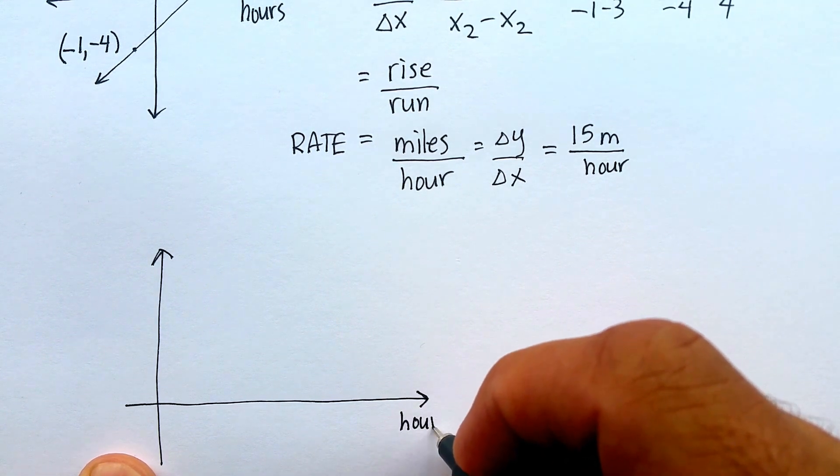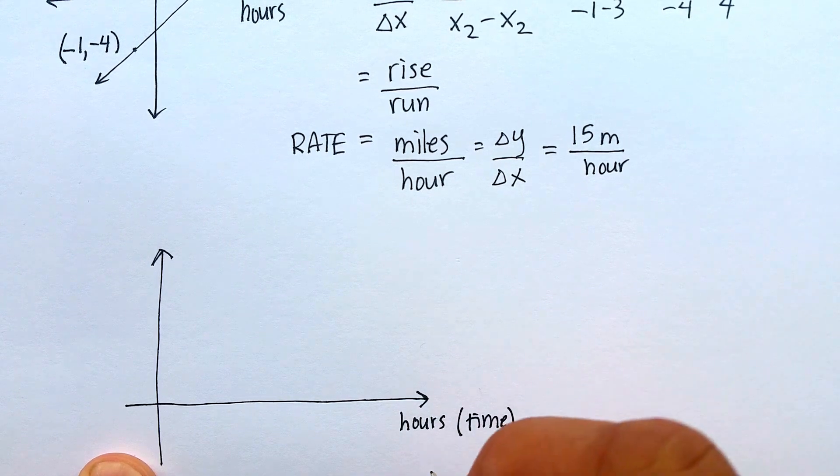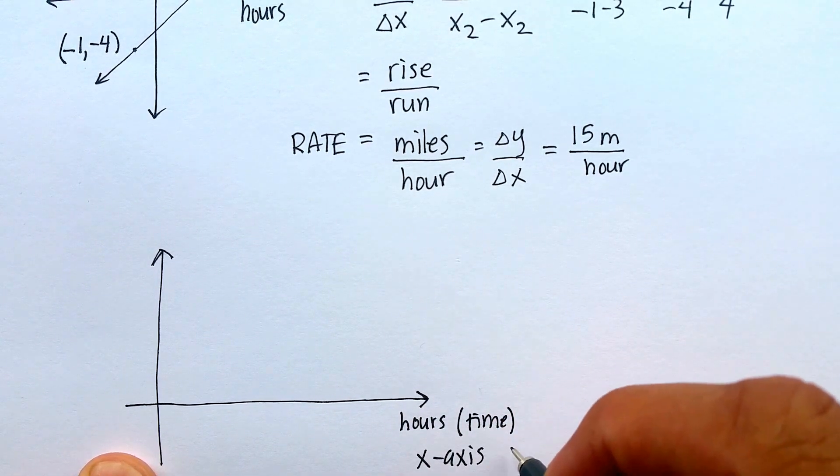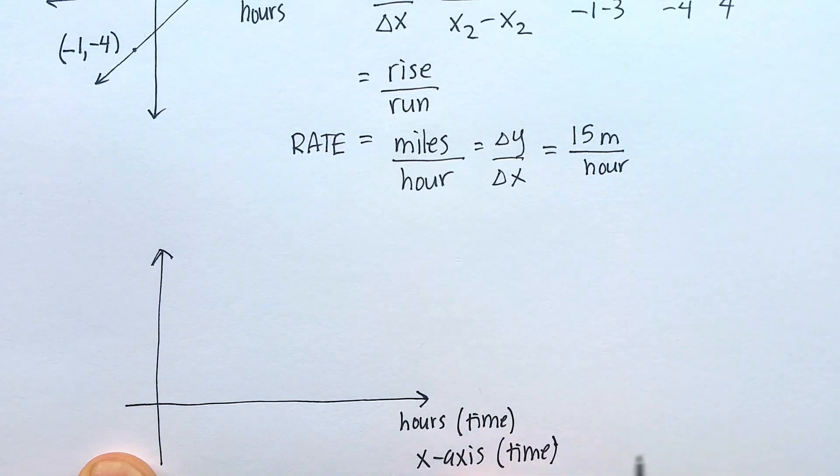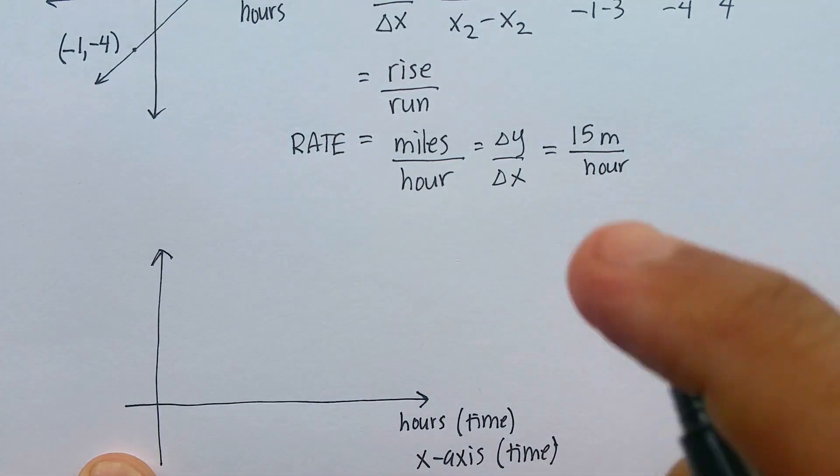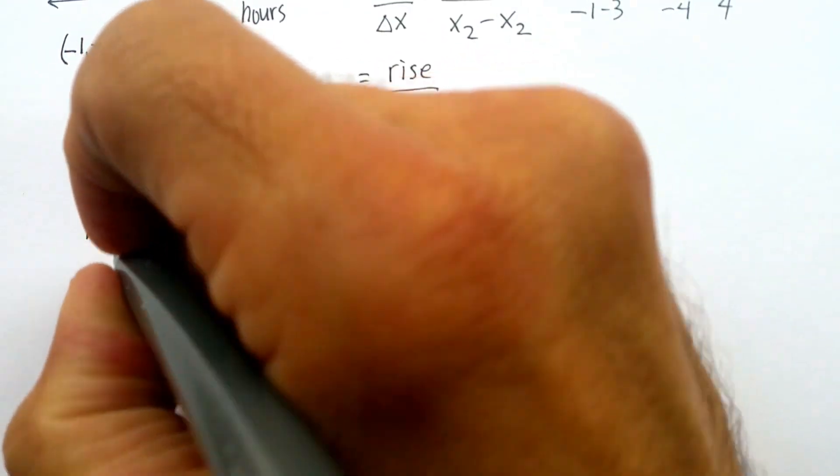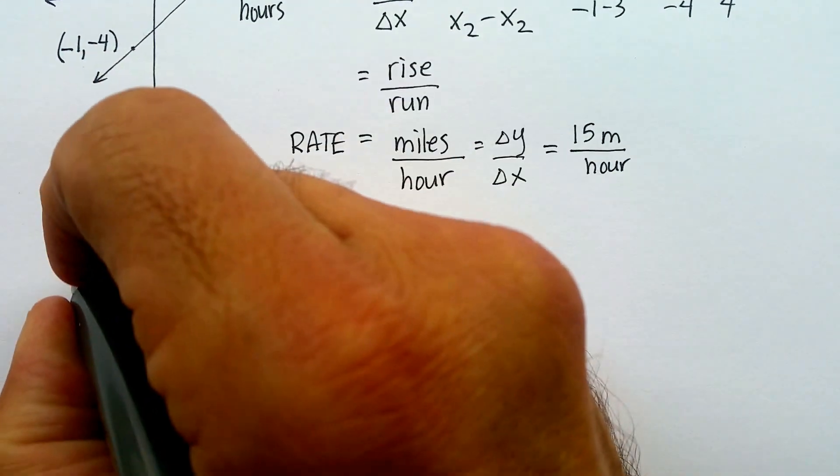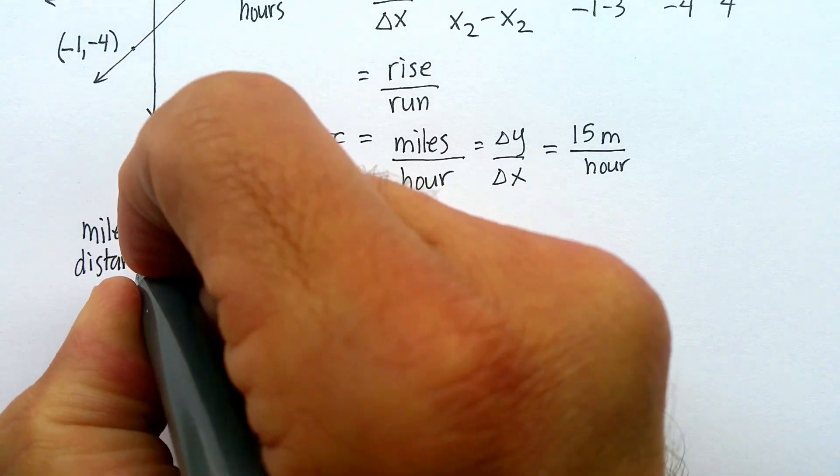And I want to make, we just said that these were hours, and most of the time you'll see the x-axis is usually time. I would say that happens probably the vast majority of the time. And then the y-axis, we call this one miles. And that's usually some kind of a distance.